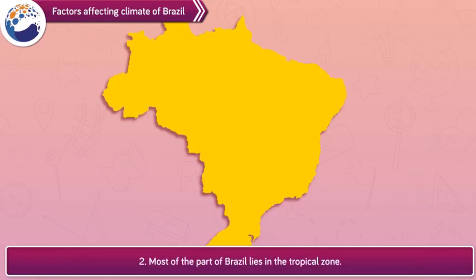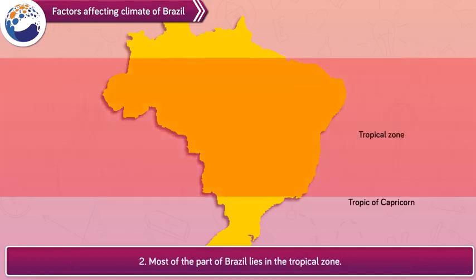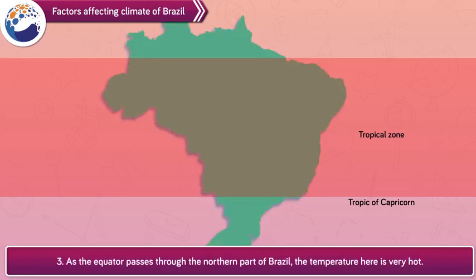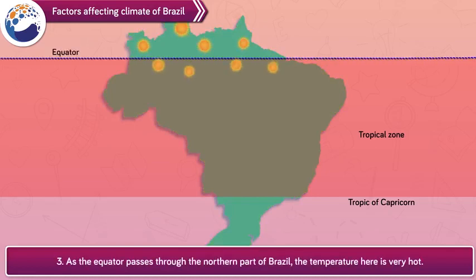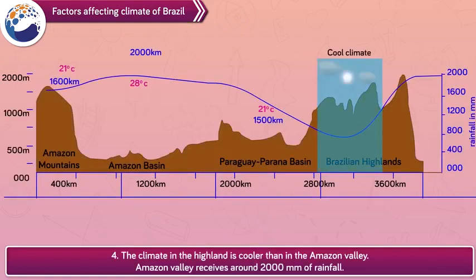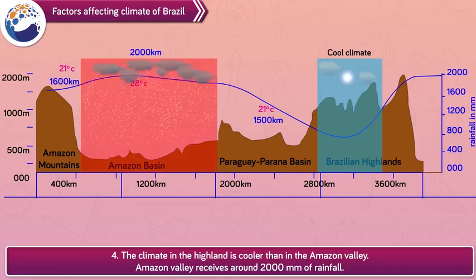Factor 2: Most of the part of Brazil lies in the tropical zone. Factor 3: As the equator passes through the northern part of Brazil, the temperature here is very hot. Factor 4: The climate in the highlands is cooler than in the Amazon Valley.